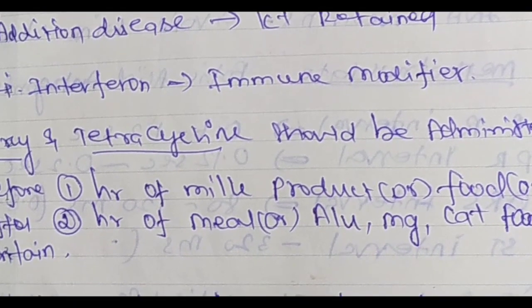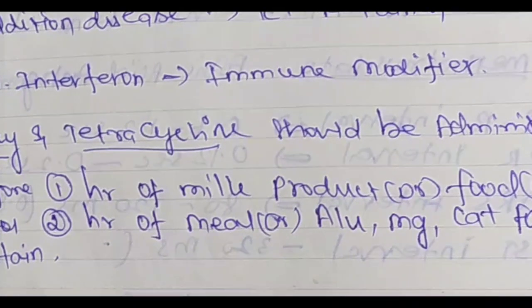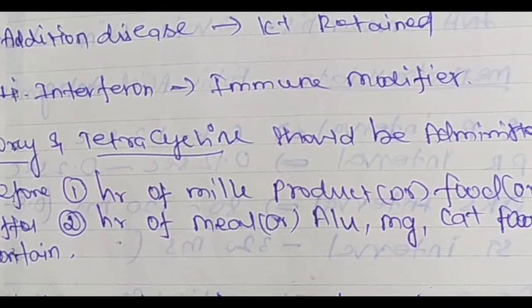Doxycycline and tetracycline should be administered before one hour of milk, products or food. Tetracycline specifically: take before one hour of milk and food, or after two hours of meals with aluminium, magnesium, or calcium-containing food.